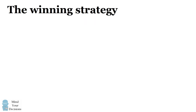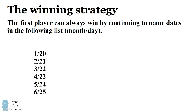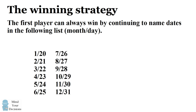There is a simple procedure that the first player can always guarantee a win. The first player should call out dates in the following list, written in the format month/day. These are a list of 12 dates. They can be remembered because the day value is equal to the month value plus 19. So the first player can always call out one of these dates and continue to call out another date in this list until reaching the winning date of December 31.